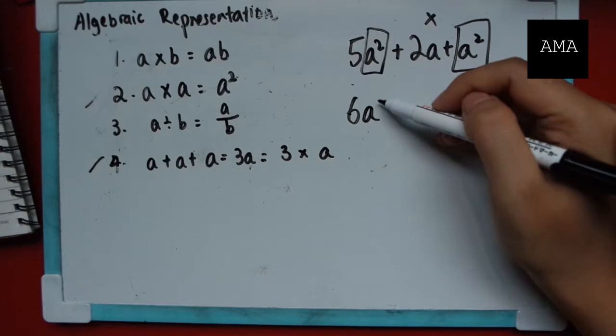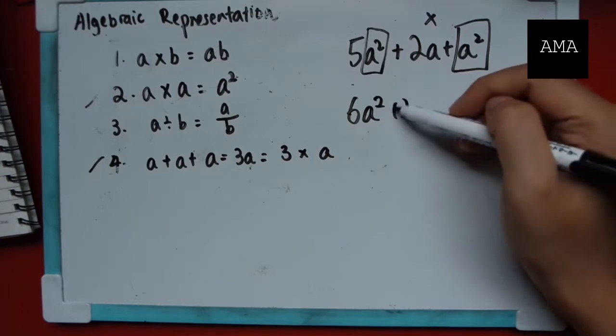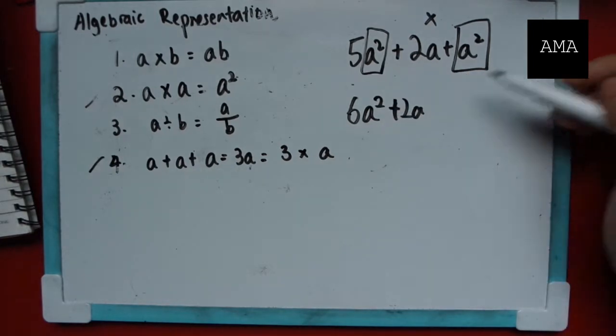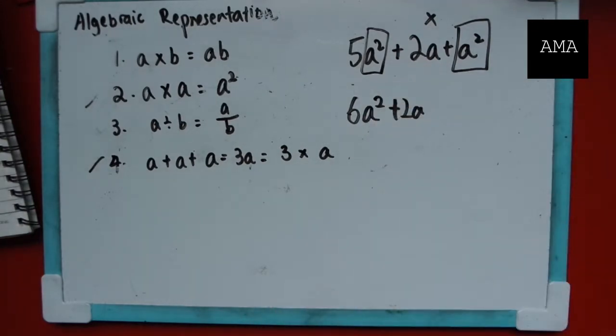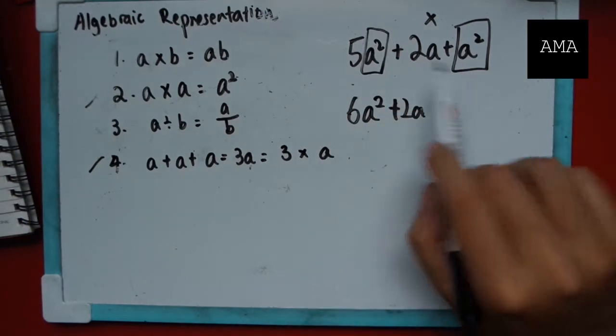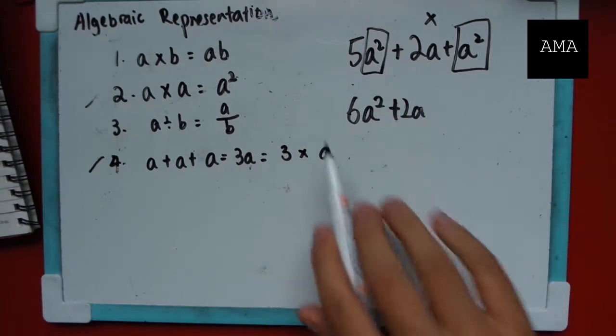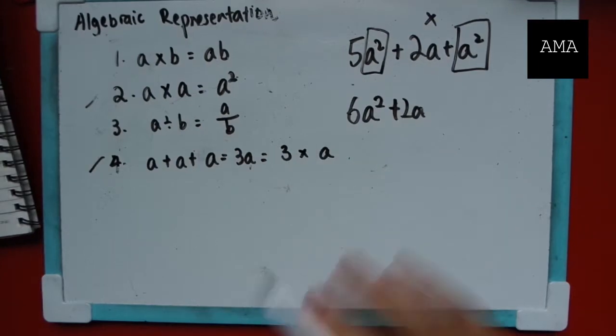So here, this would be 6a square plus 2a. So this is, for now, the simplest it can get. In the next video, I'll talk about factorization where you can simplify this further. But for now, just focus on this. This is the best you can get.